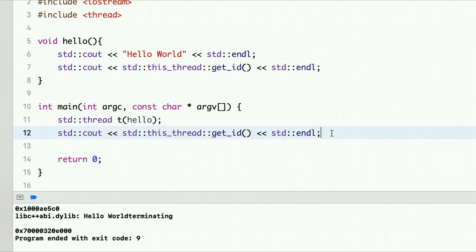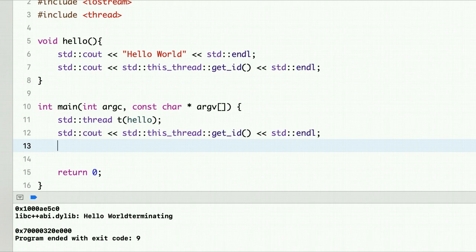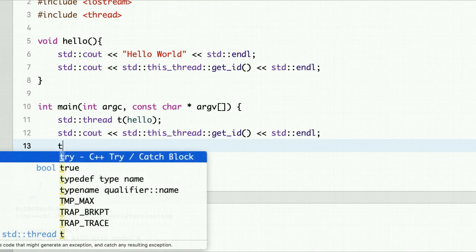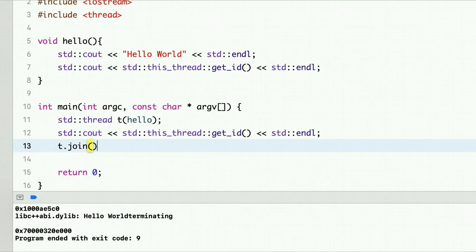Now let's call join. So once main thread prints, we will call t.join and the main thread here waits for T to finish. Now let's run it.